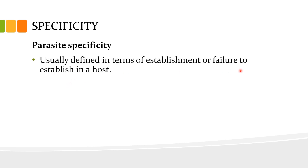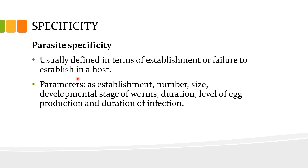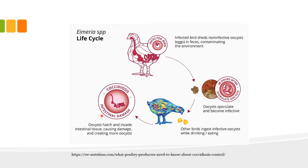Parasite specificity is usually defined in terms of establishment or failure to establish in a host. Parameters indicating the degree of adaptation include establishment, number, size, developmental stage of the parasite or worms, duration of infection, and level of egg production. The lifecycle of Eimeria illustrates this — Eimeria is a protozoan parasite considered to be monoxenous, meaning the cycle occurs in one host, giving it an absolute or total restriction in host range. In this example, the host is poultry, specifically chickens.